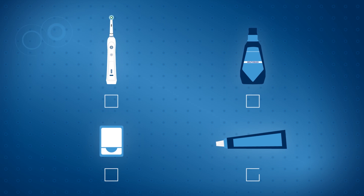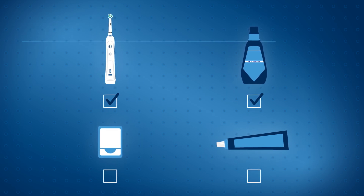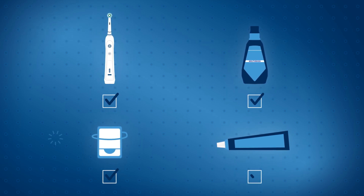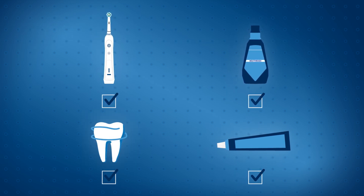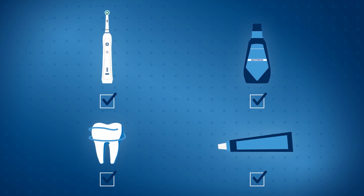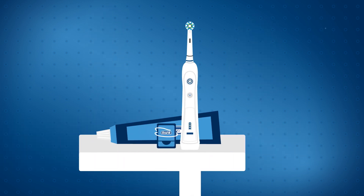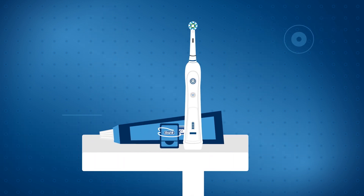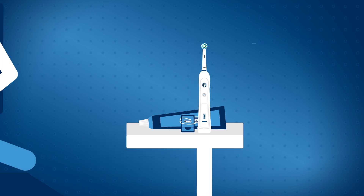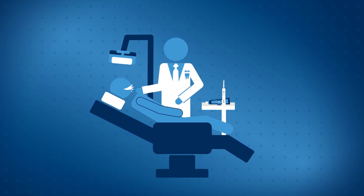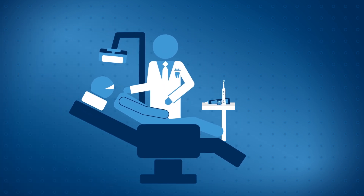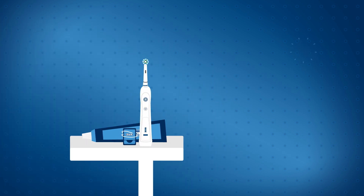Despite the impact caries can have on your teeth, they are largely preventable with regular dental checkups and maintaining a great oral care regimen. This includes using a fluoride toothpaste and an electric toothbrush. There are a lot of electric toothbrushes on the market, but according to dentists, going with Oral-B is always a good bet. Just make sure you maintain healthy habits for a healthy smile for years to come.